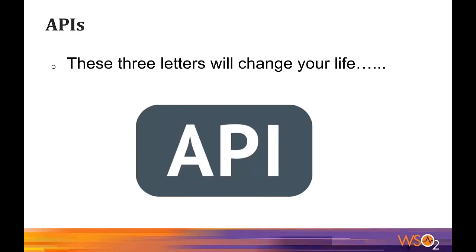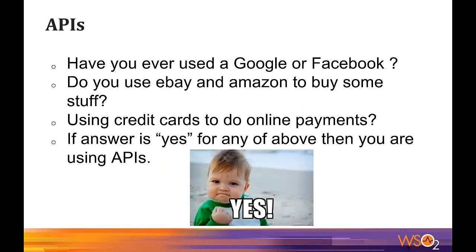APIs are used everywhere nowadays. Each and every time we use Google or Facebook we are accessing APIs. When you try to buy something from Amazon or eBay, or use a credit card for electronic transactions, we are again using APIs. Each and every person in this world is now using APIs.